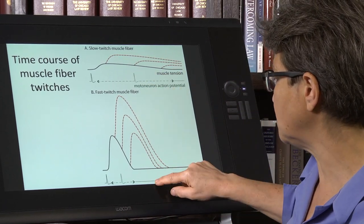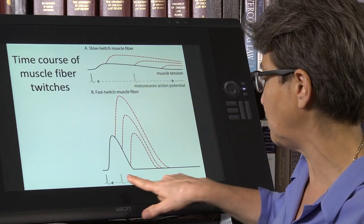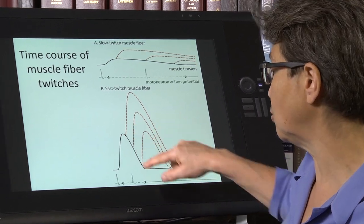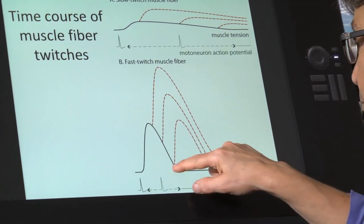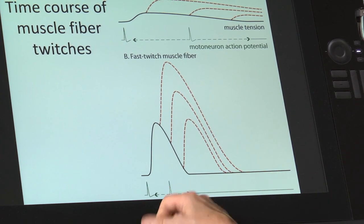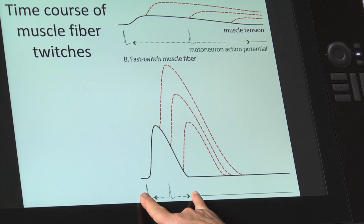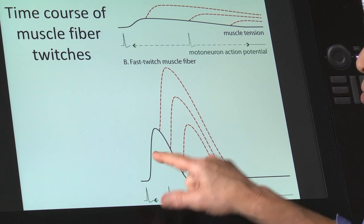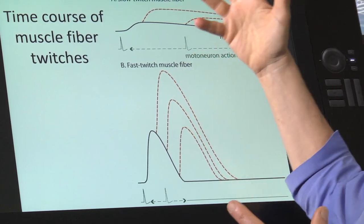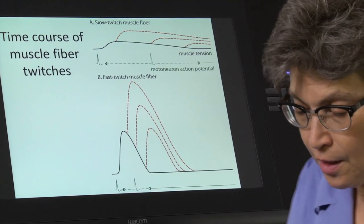Whereas that same, a muscle, an action potential way out here after an initial one is going to occur way after this muscle tension has returned to baseline. And so it can't summate. It's only in a much more restricted period of time that action potentials can occur and produce a summation of muscle tension.